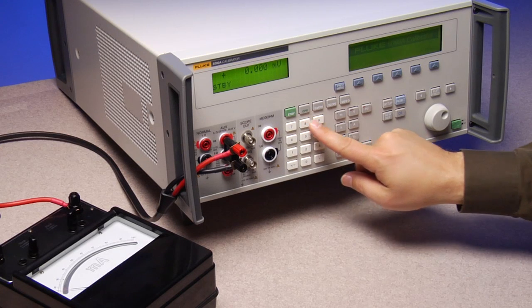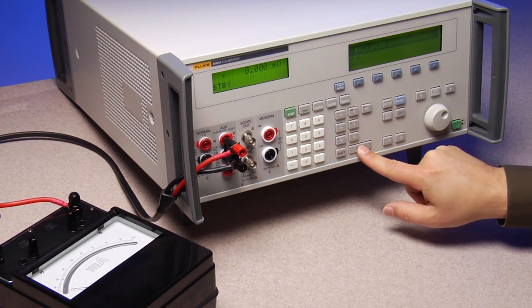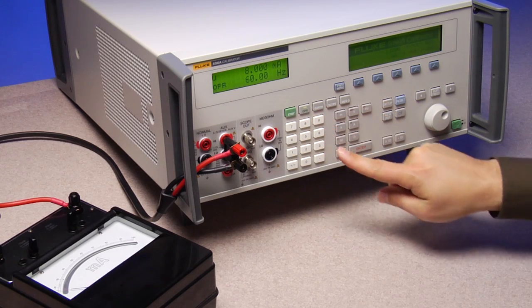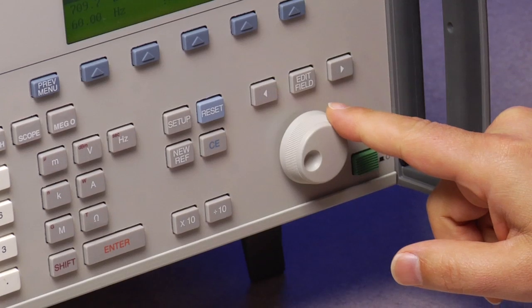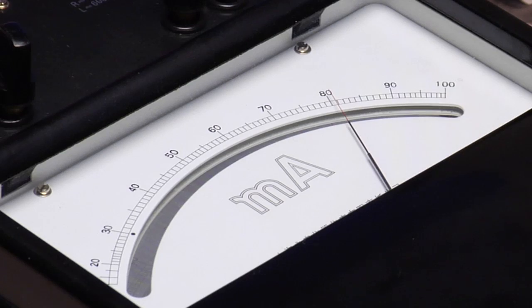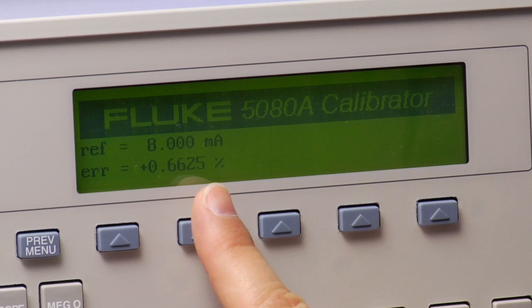This 5080A calibrator is set up to calibrate an analog amp meter. For each test point we can slew the source output until the meter reads nominal value. From the front panel turn the knob or use the keypad. This can also be achieved with 5080 cal software. We'll record the nominal reading of the analog meter and the output of the calibrator and calculate the error. Or you can read the error directly from the 5080's front panel display.